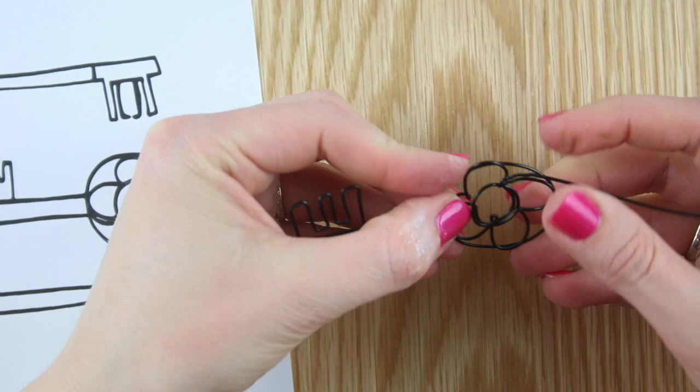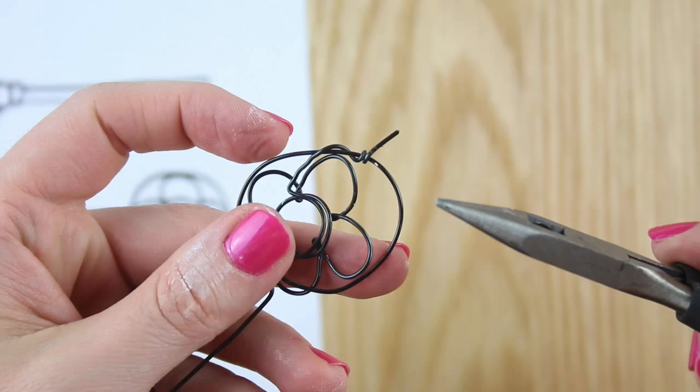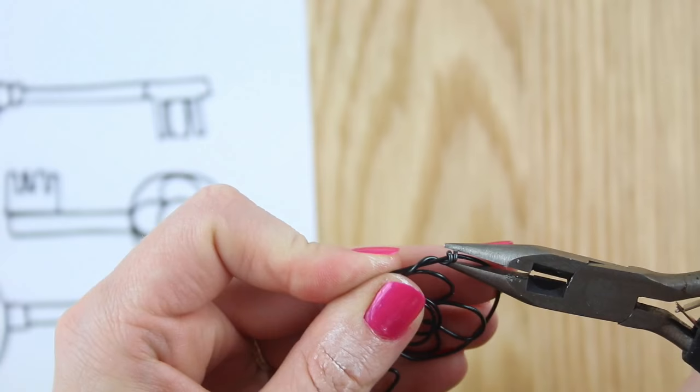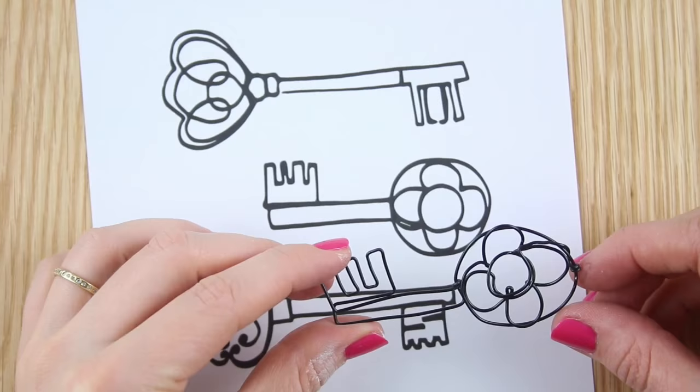Leave a centimeter of wire for the join and cut the wire. Loop the end around the outer circle wire, tighten and cut off the excess. Use your pliers to squeeze and neaten as before. Now as you've handled your piece it's likely to come out of place a little so just use the template and adjust it back into place to complete your first key. Now we'll do the second key.